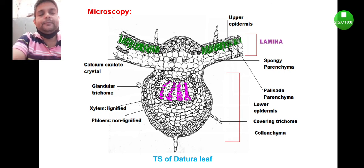In the lamina part you will find the upper epidermis, which consists of anomocytic stomata, then multicellular covering trichome, then the spongy parenchyma and palisade parenchyma. Both spongy and palisade parenchyma together are known as mesophyll.